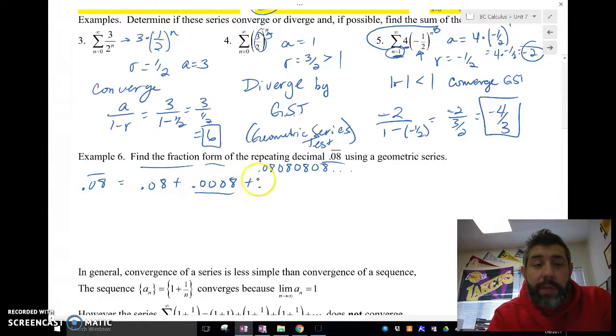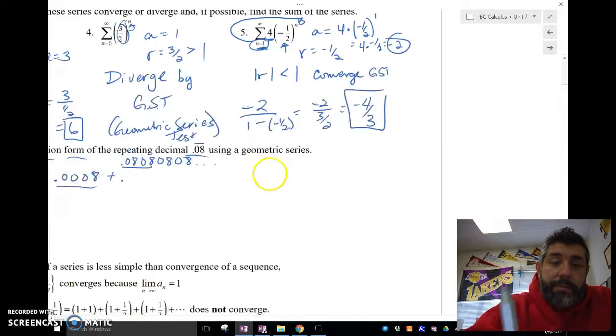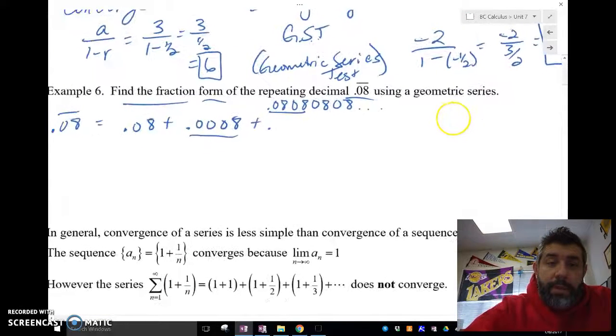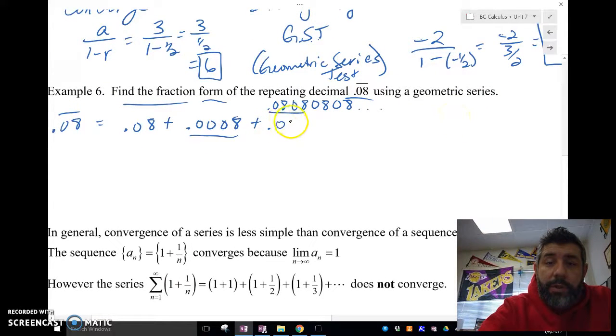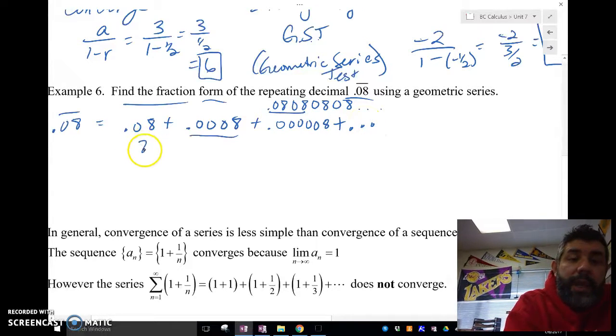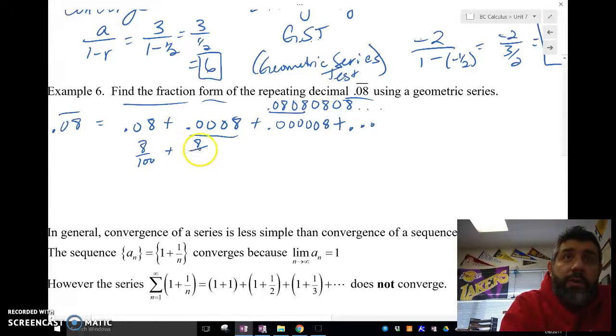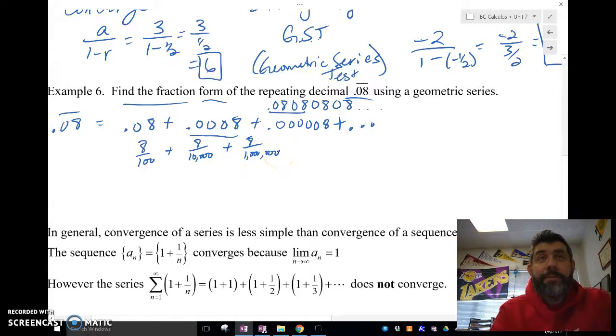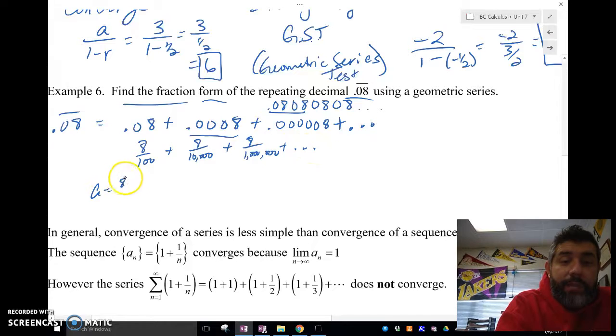Plus 0.0008, 1, 2, 3, 4, 5, and then 8, and so forth, right? Okay. Well, this is going to be 8 over 100. This is going to be 8 over 10,000. This is going to be 8 over 1,000,000 and so forth.